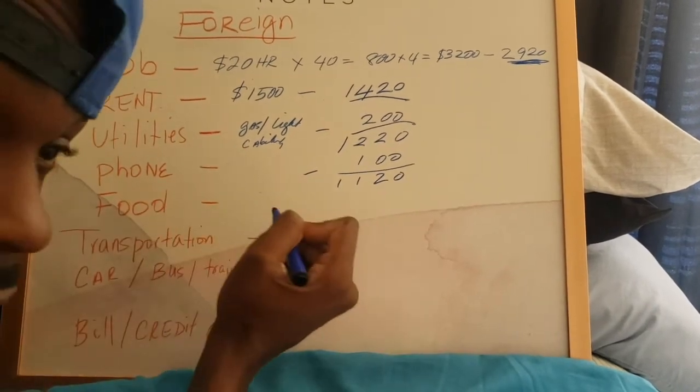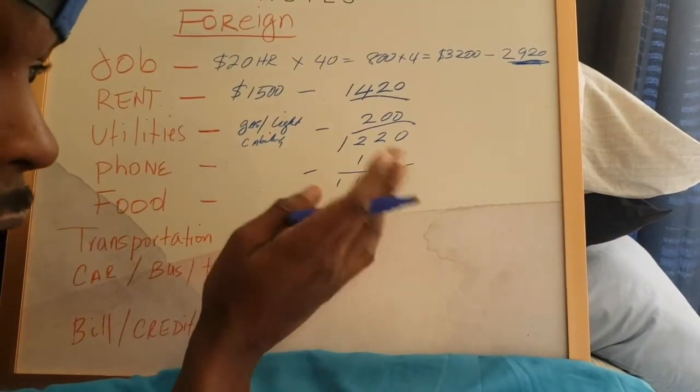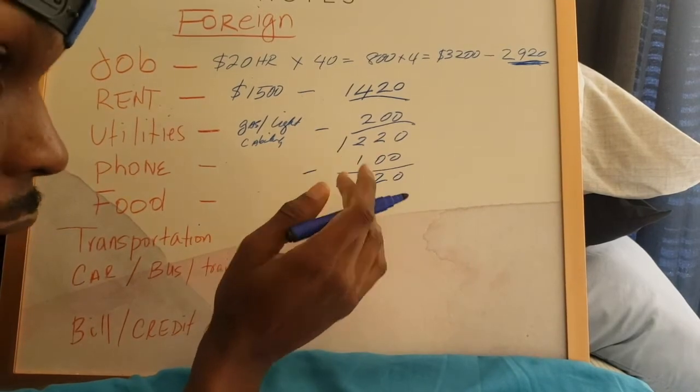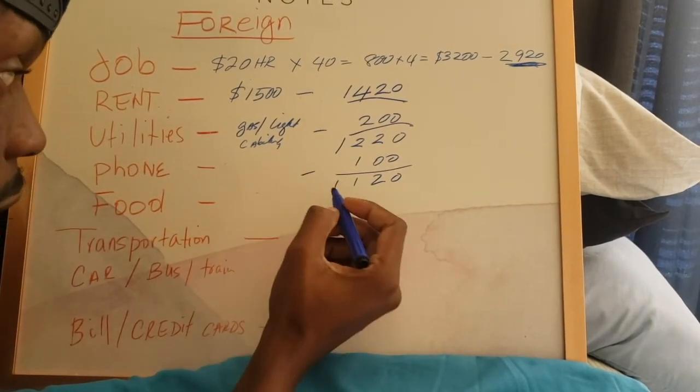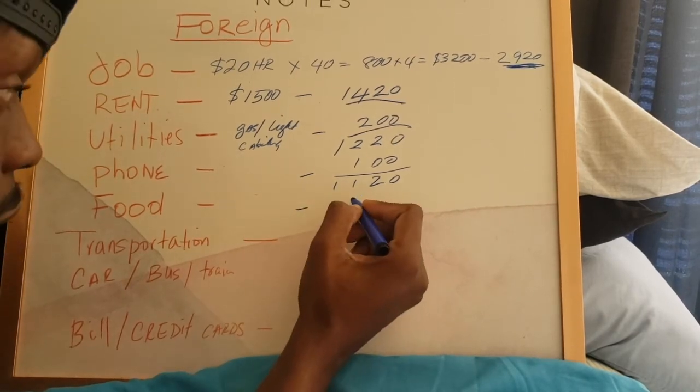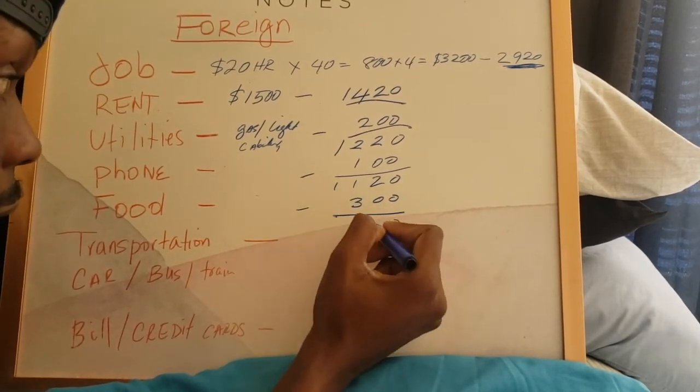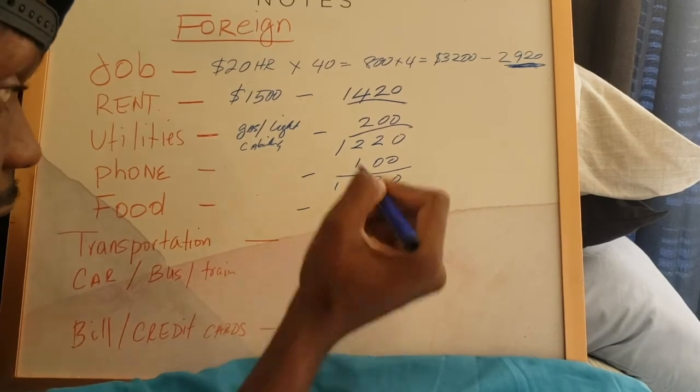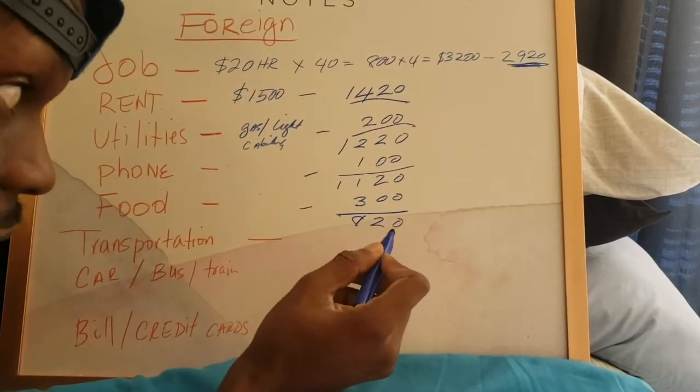Now you need food because you have to eat. Let's just say you're not the type to buy food all the time, so you just buy food and cook. Roughly I would say $300 a month would do this. So if you subtract $300 from that, you end up with $820 left.